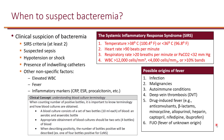When should bacteremia be suspected? There is something referred to as the SIRS criteria, or the systemic inflammatory response syndrome. It includes four criteria, and if the patient has at least two of these, bacteremia should be suspected.